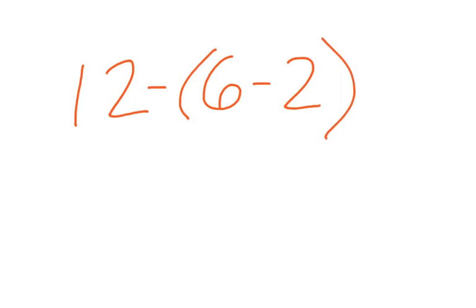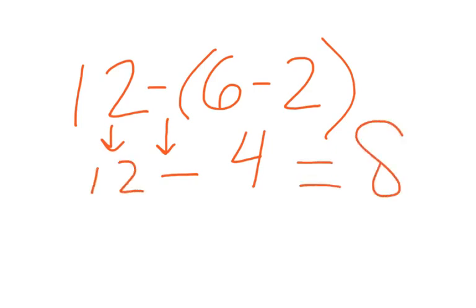Example number 1. It says simplify 12 minus... And simplify, just so you guys know, is a fancy way of saying please solve this equation. So, 12 minus 6 minus 2. You have to do parentheses first. 6 minus 2 is 4. And then we're going to bring down every piece. And I have 12 minus 4. And I get 8.